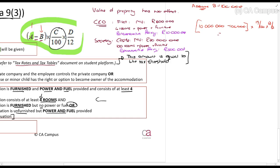And for the secretary, it is R500,000 minus R100,000 times 19/100 times 12/12. That's R76,000.